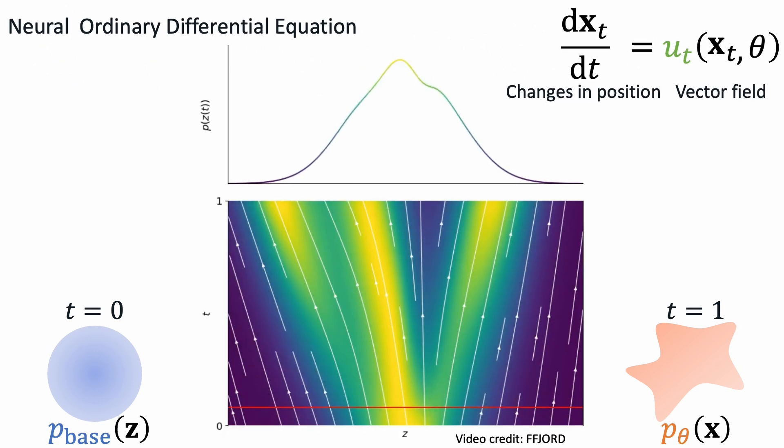Let's visualize what this looks like. Here we see the vector field gradually transform a simple base distribution, like a Gaussian, into a more complicated one. The arrows there specify the time-varying vector fields. Here are some 2D examples.